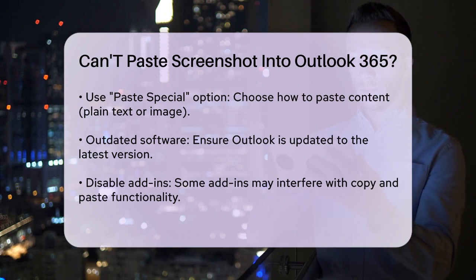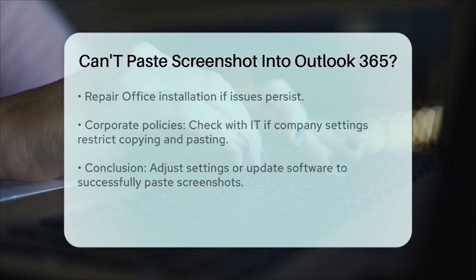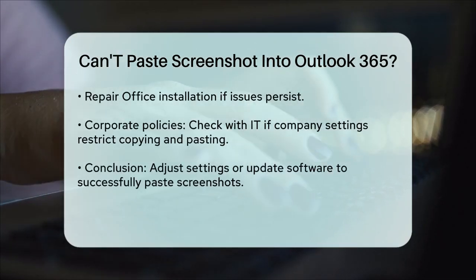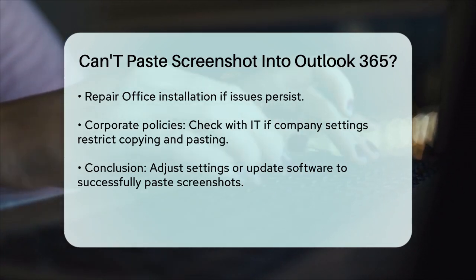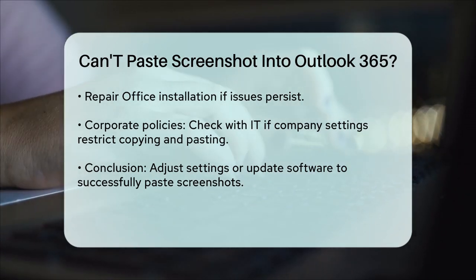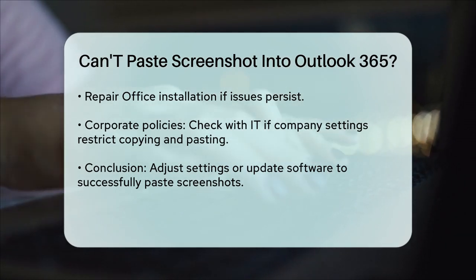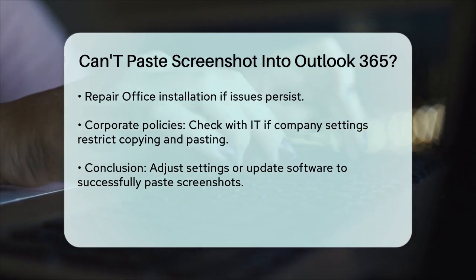Additionally, outdated software or add-ins can interfere with the copy and paste function. Make sure you have the latest version of Outlook installed and disable any add-ins that might be causing the problem. If none of these steps work, you might need to repair your Office installation. In some cases, security settings or company policies might restrict copying and pasting certain types of content into Outlook. If you're working in a corporate environment, check with your IT department to see if there are any specific policies or settings that could be blocking this functionality.